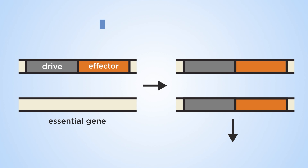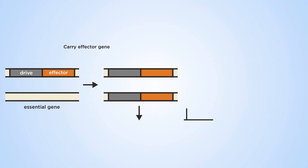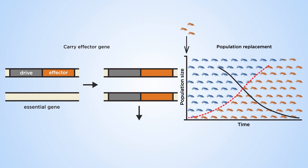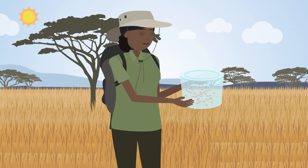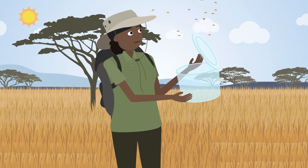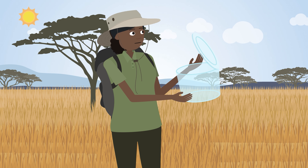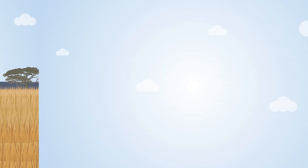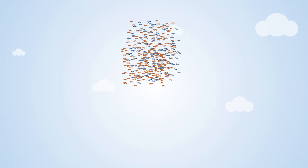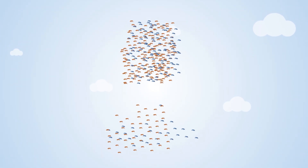Population replacement involves modifying the mosquitoes to make them unable to transmit malaria parasites. Both approaches involve release of transgenic male mosquitoes to mate with wild type populations to spread the genetic modification.